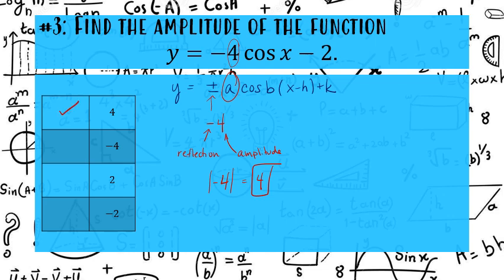So amplitude will always be positive no matter what. The negative in front just signifies a reflection.